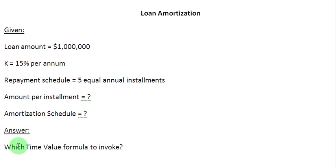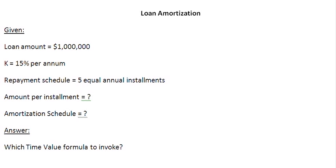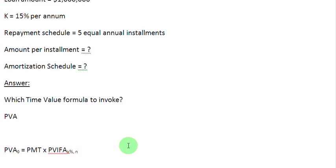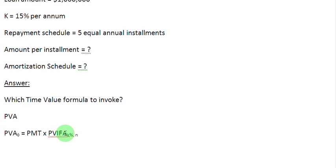Let us answer the first question. The key question we need to ask ourselves is: which time value formula do we invoke for this purpose? The answer is we have to invoke the present value of an annuity formula, which states that the present value of the annuity equals the payment times the present value interest factor of the annuity at k percent for n periods.